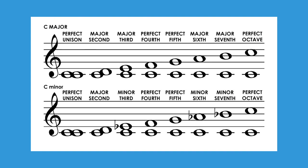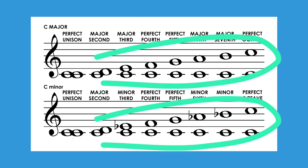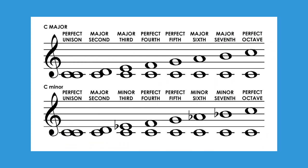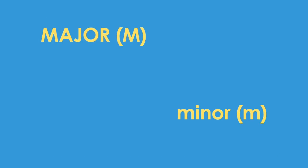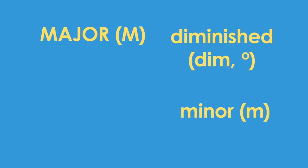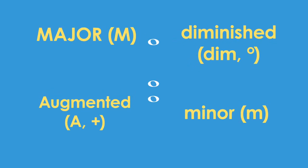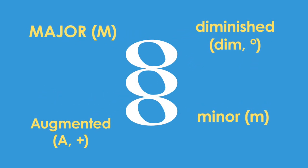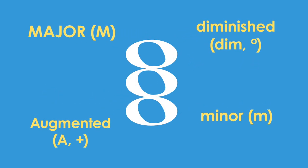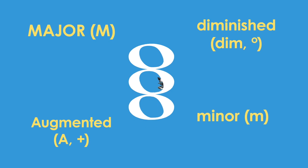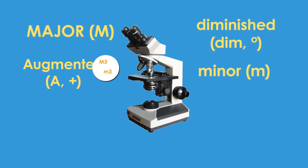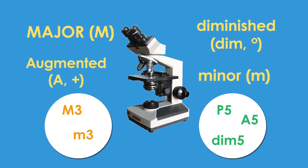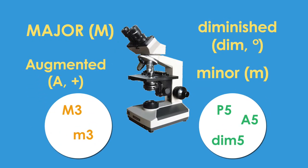Just like intervals with only two notes, triads can come in different types including major, minor, diminished, and augmented. How do we tell if a triad is one of these different types? We have to find the type of interval that makes up the third and the fifth of the triad.